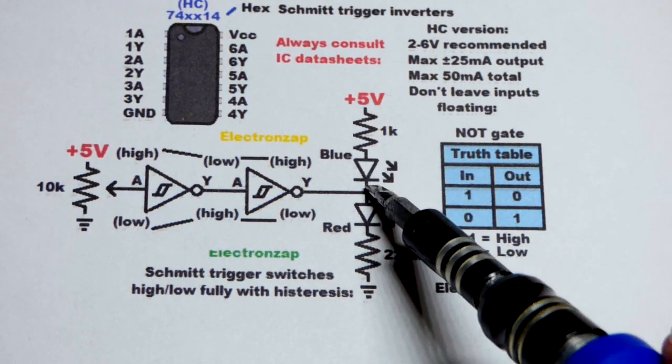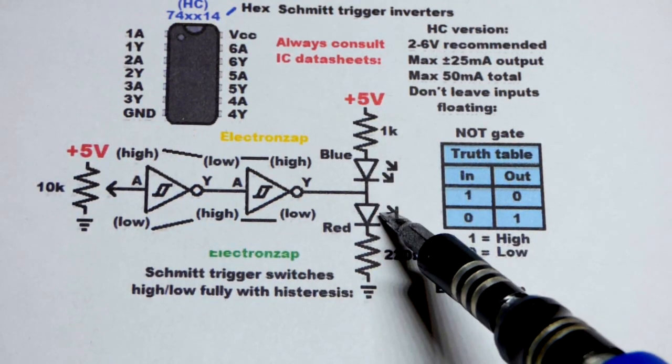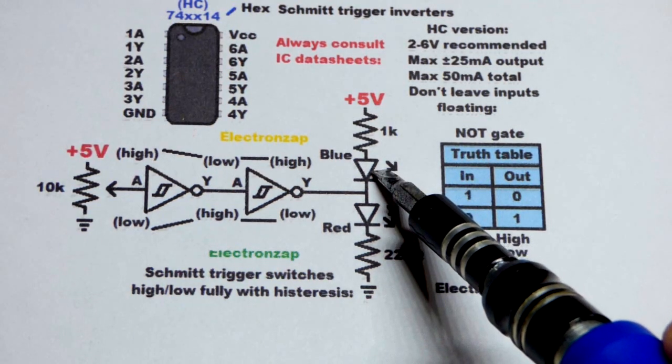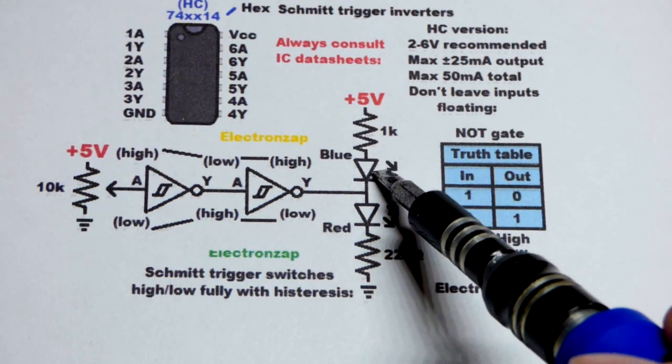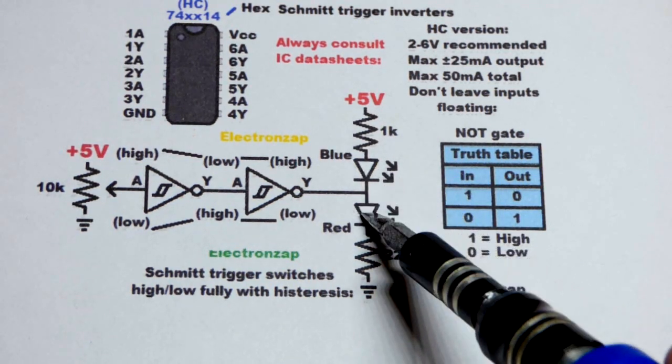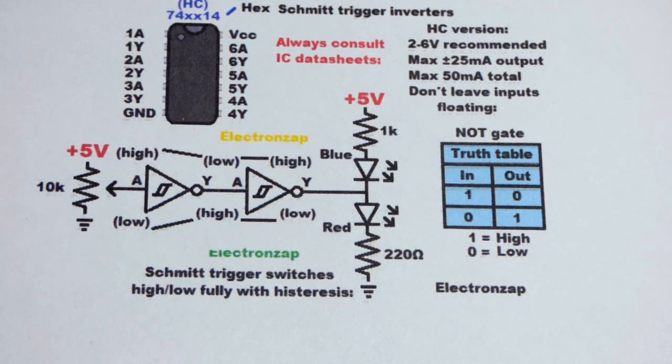We're going to use a 1000 ohm resistor to protect the blue LED, 220 ohm to protect the red LED, because blue LEDs are brighter than red LEDs with the same current. So we'll have a lot less current through the blue LED, but it'll be about the same brightness as the red LED.